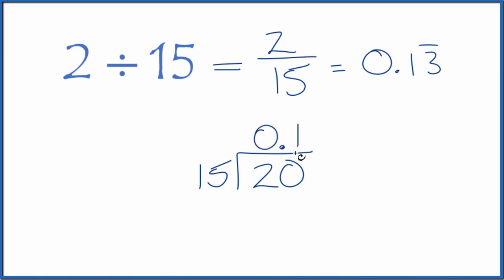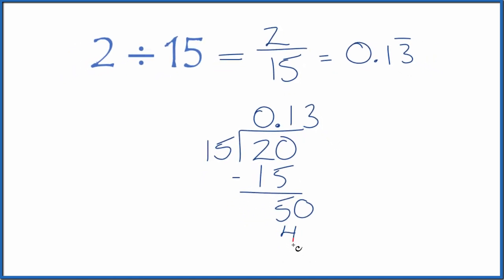So 1 times 15, subtract, we get 5. So let's call this 50, move over 1. 3 times 15, that's 45.